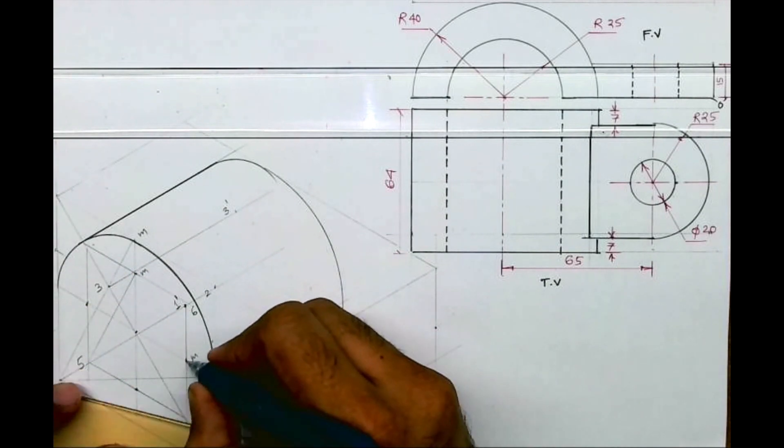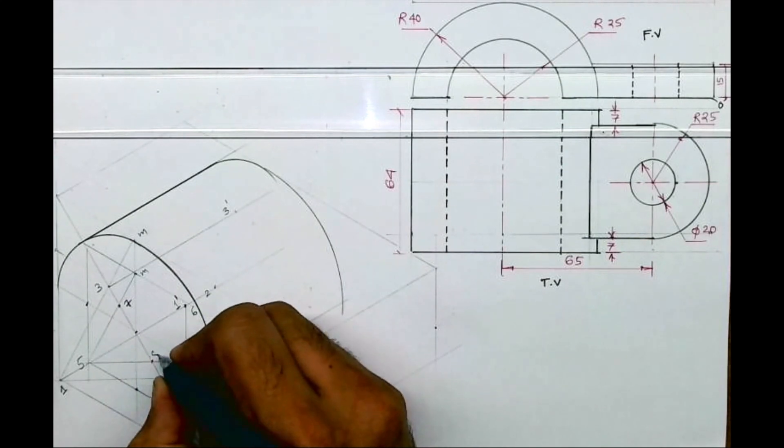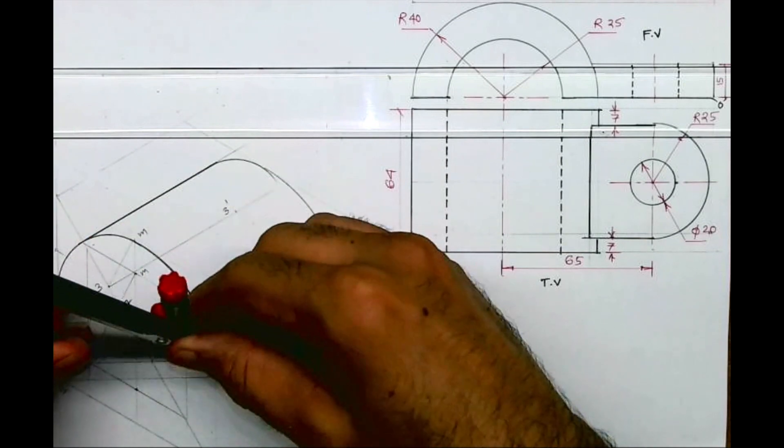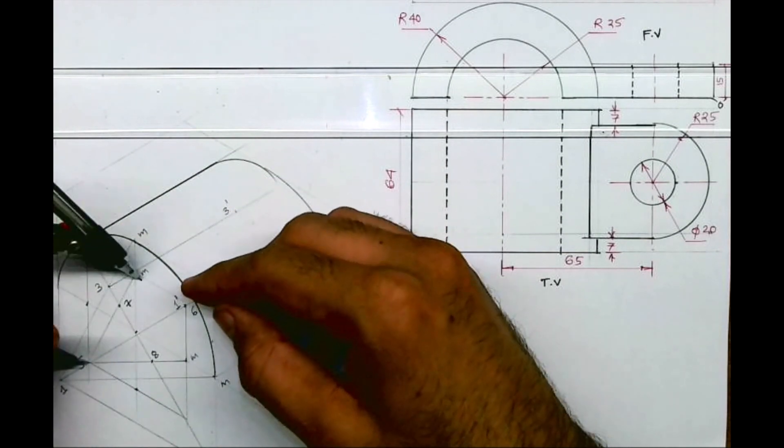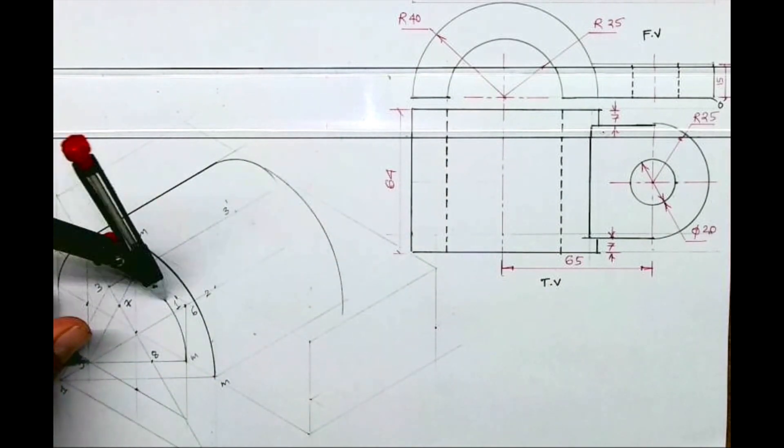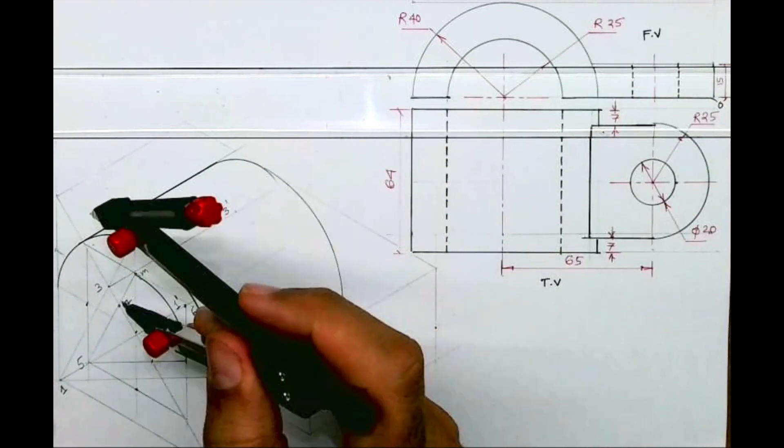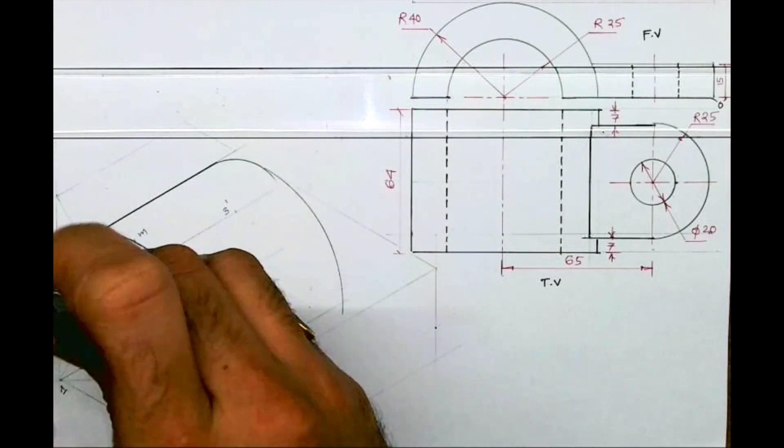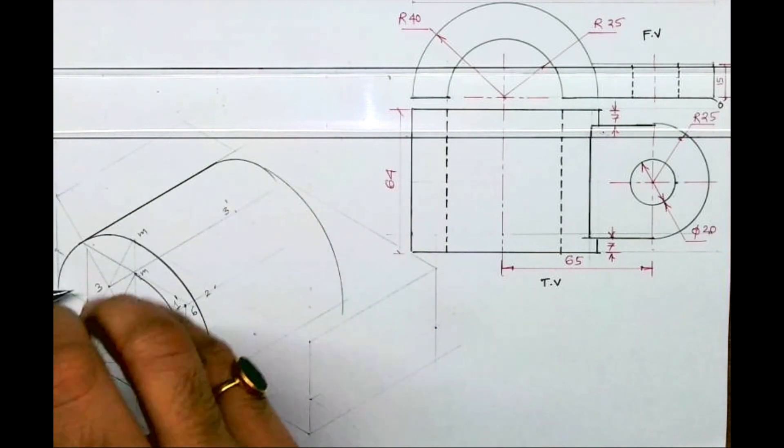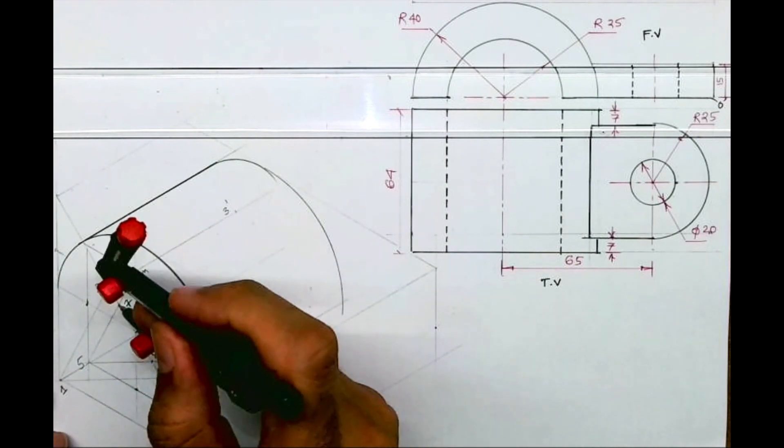So five to M, you draw arc five to M. This is point seven, this is point eight. So five to M you draw arc. So we are done with the semicircle part which is part one. If you want to see in front view then.